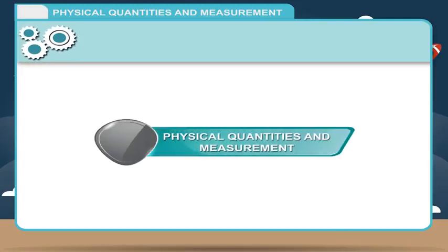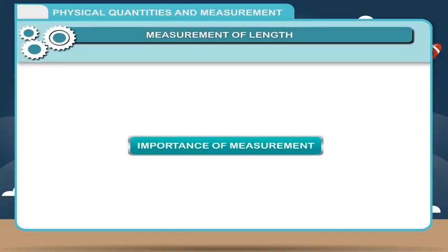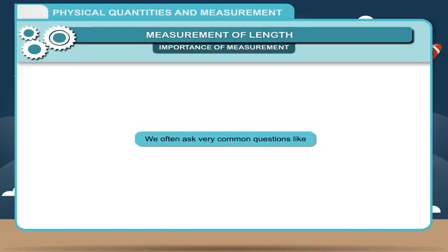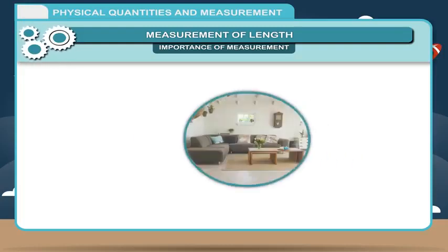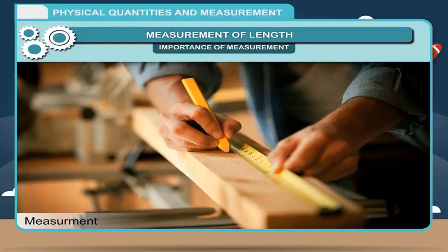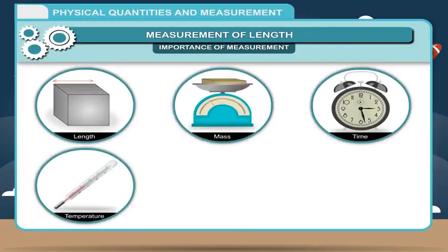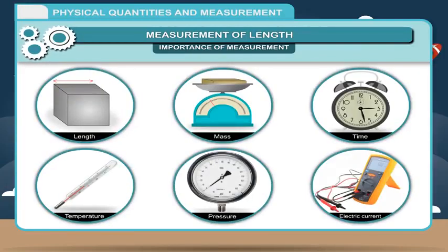Physical Quantities and Measurement: Measurement of Length. We often ask very common questions like: What is the length of this room? How long are you waiting? What is your age? Study of Physics is based on measurement. In Physics, we usually learn how to measure quantities involved in it. Among these quantities, some are length, mass, time, temperature, pressure, and electric current.